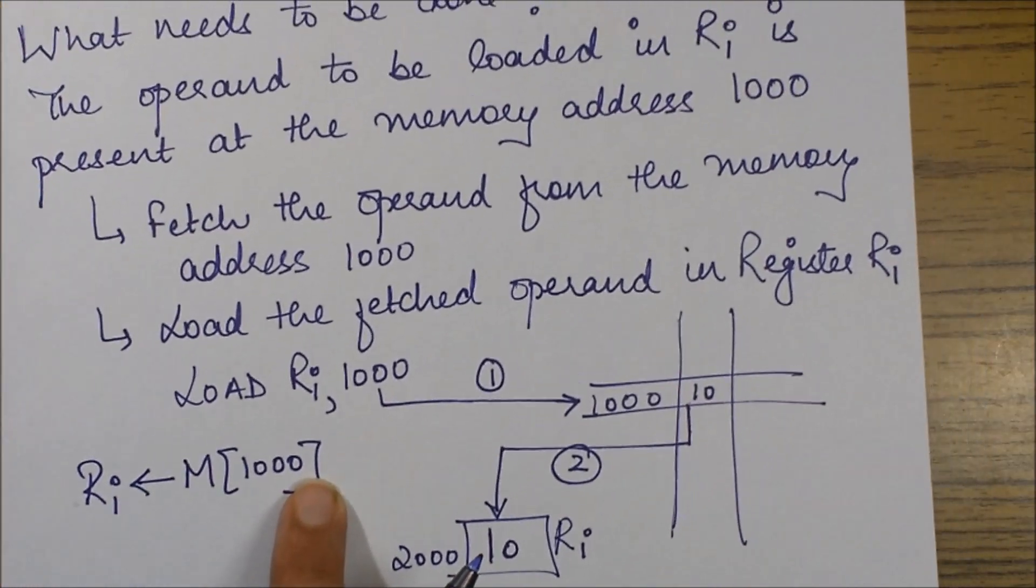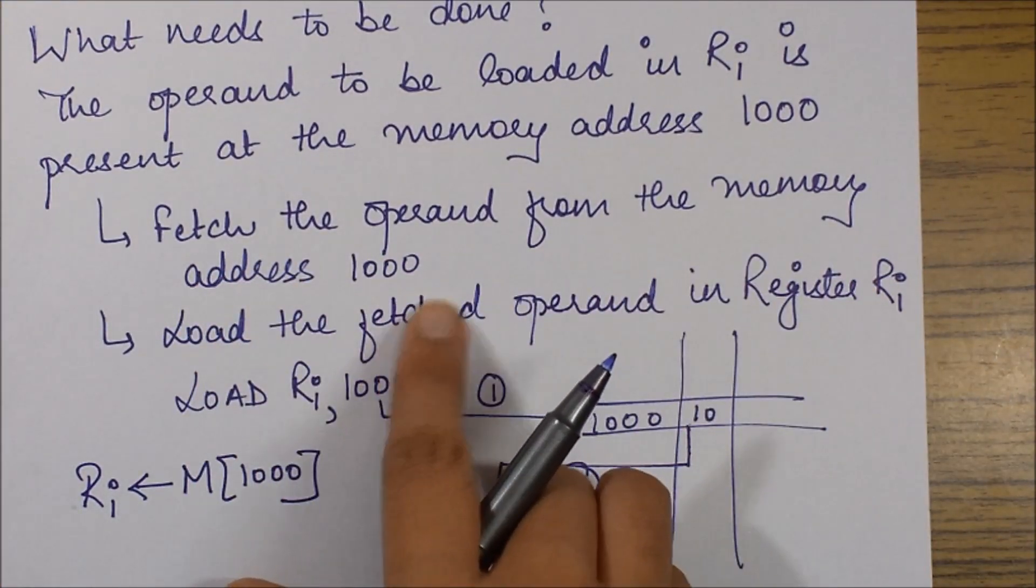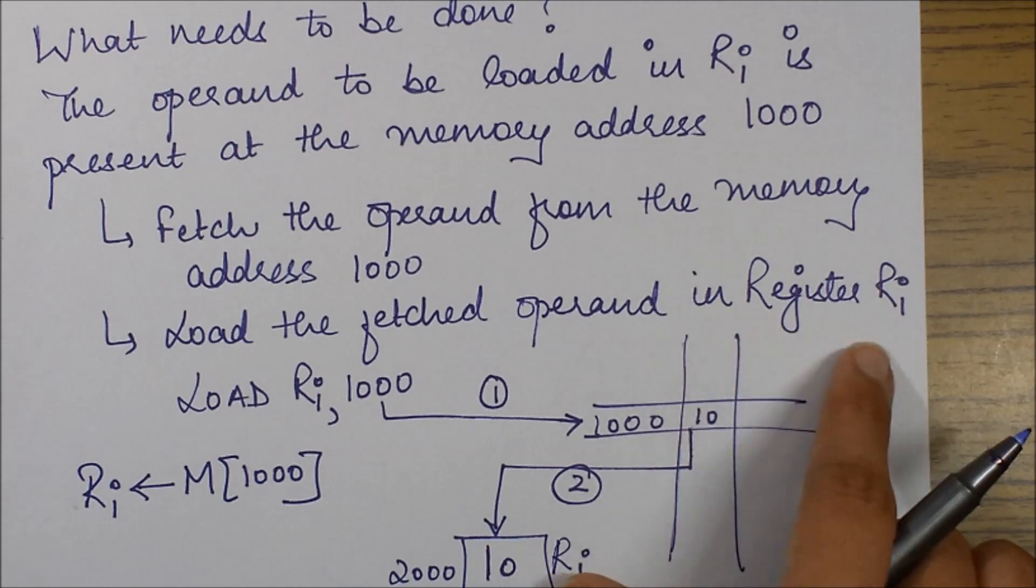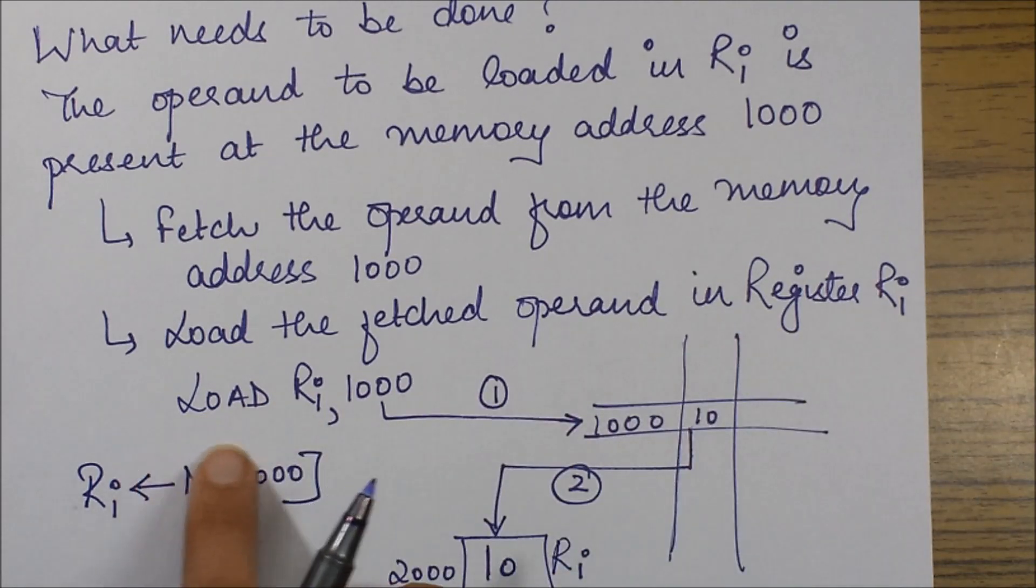So this is what is to be done. We first of all fetch the operand from the memory address 1000, we load the fetched operand in register RI, and the instruction is this.